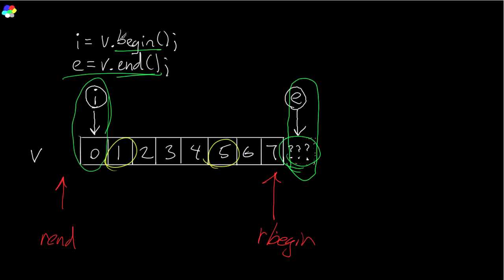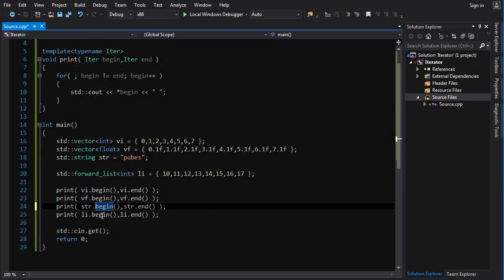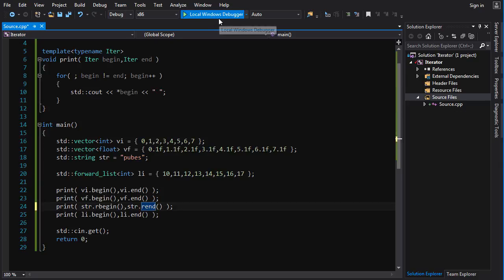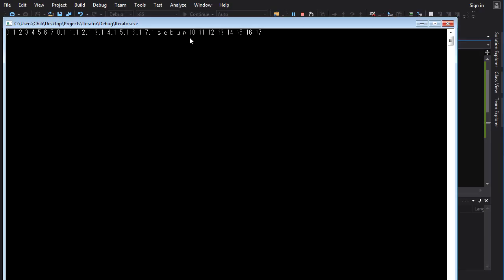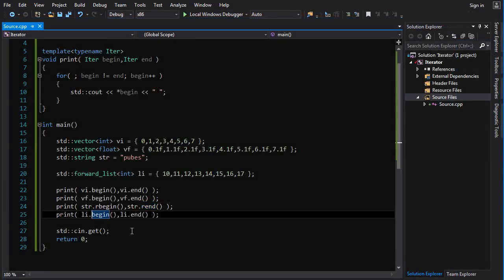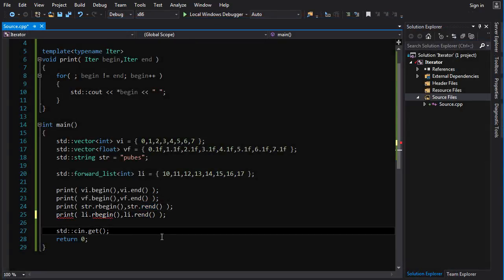Besides begin and end, there are also functions to get reverse iterators: rbegin and rend. rbegin points to the last element, rend gives you a reverse iterator pointing one before the first element. When you increment a reverse iterator, it actually moves left by one. So using rbegin and rend and passing them into an algorithm will cause it to work in the reverse direction — for example, reversing the output of 'pubes' to get 'cbuP'. Not all containers support reverse iterators; forward_list, for instance, only moves forward.